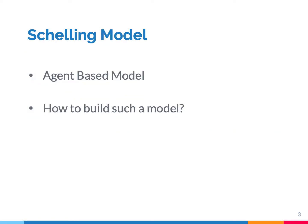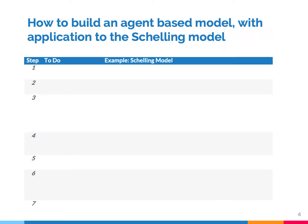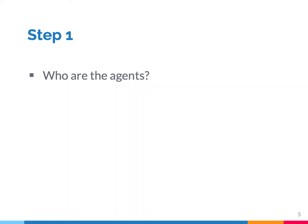The Schelling model is a so-called agent-based model. To understand the Schelling model, it's fruitful to know how to build an agent-based model. Let's see how that works step by step, and what we can learn from the Schelling model. In the first step, you define who is in your model. These are so-called agents.